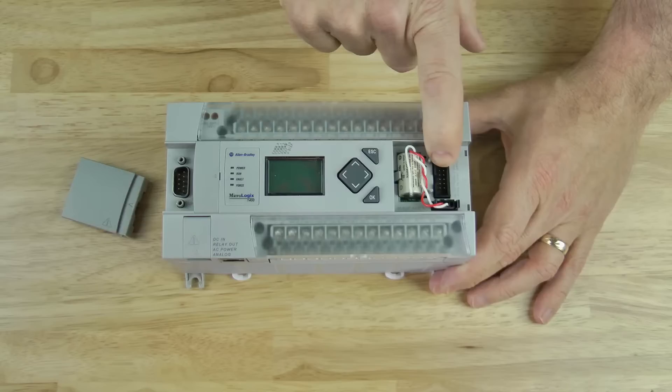This MicroLogix, the 1400, supports any seven expansion modules of the 1762 type.